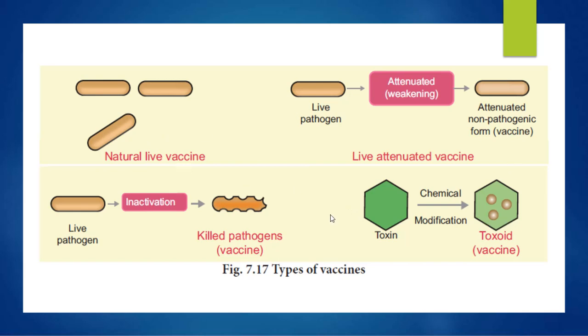So there are different types of vaccines: natural live vaccines, live attenuated vaccines, killed vaccines, and toxoid vaccines.